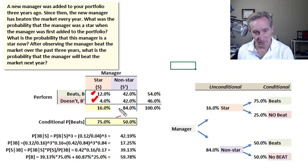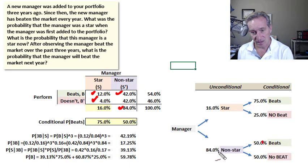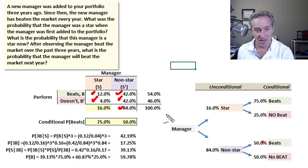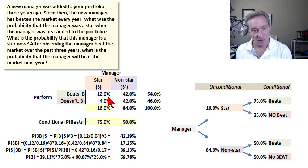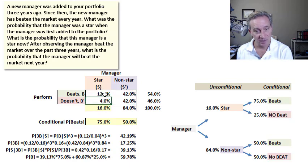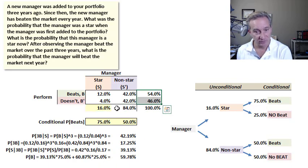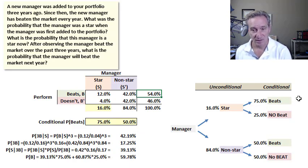Similarly, for non-star managers with an unconditional probability of 84%, the joint probability of a non-star beating the market is 84% × 50% = 42%, and the joint probability of a non-star not beating the market is also 84% × 50% = 42%. The cells inside the probability matrix are joint probabilities and must sum to 100%, which they do. The unconditional probability that somebody beats the market is 54%.